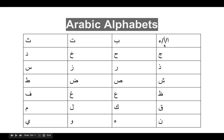The Arabic letters are: Alif, Ba, Ta, Tha, Jim, Ha, Kha, Dal, Dal, Ra, Zay, Sin, Shin, Saan, Dod, Ta, Zaw, Ayn, Ghain, Fa, Qaf, Kaaf, Lam, Mim, Nun, Ha, Waw. These are the Arabic letters.